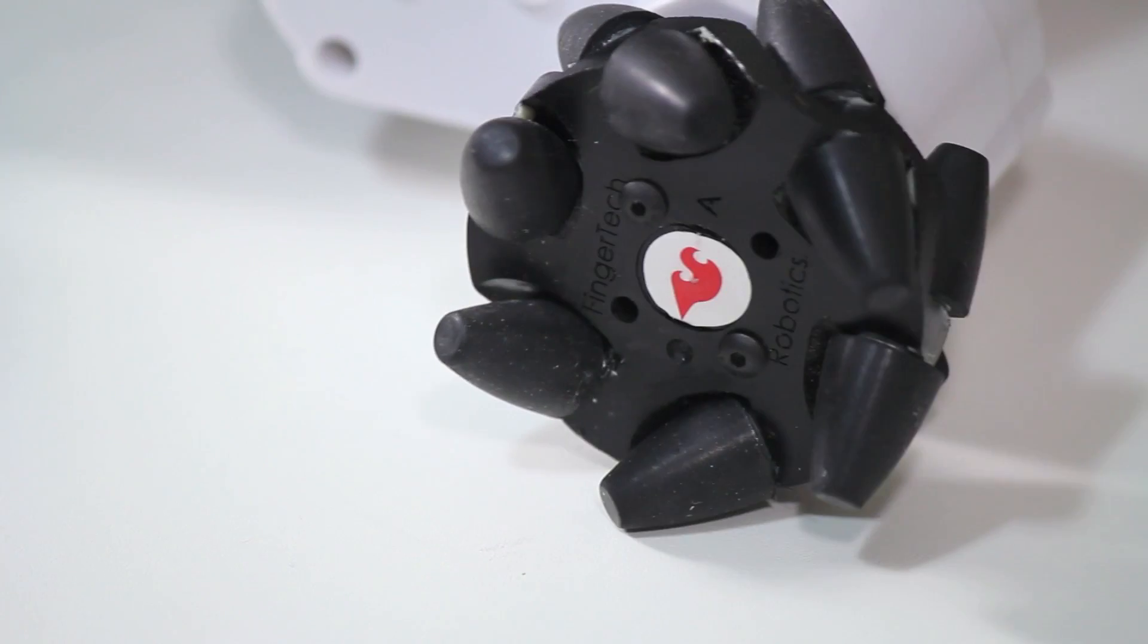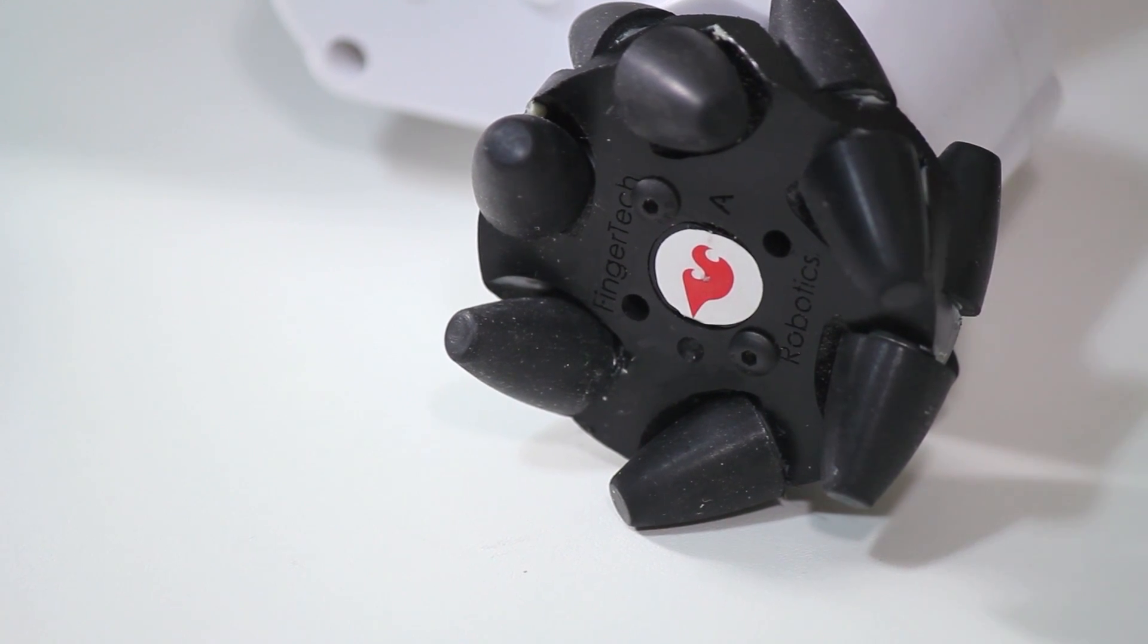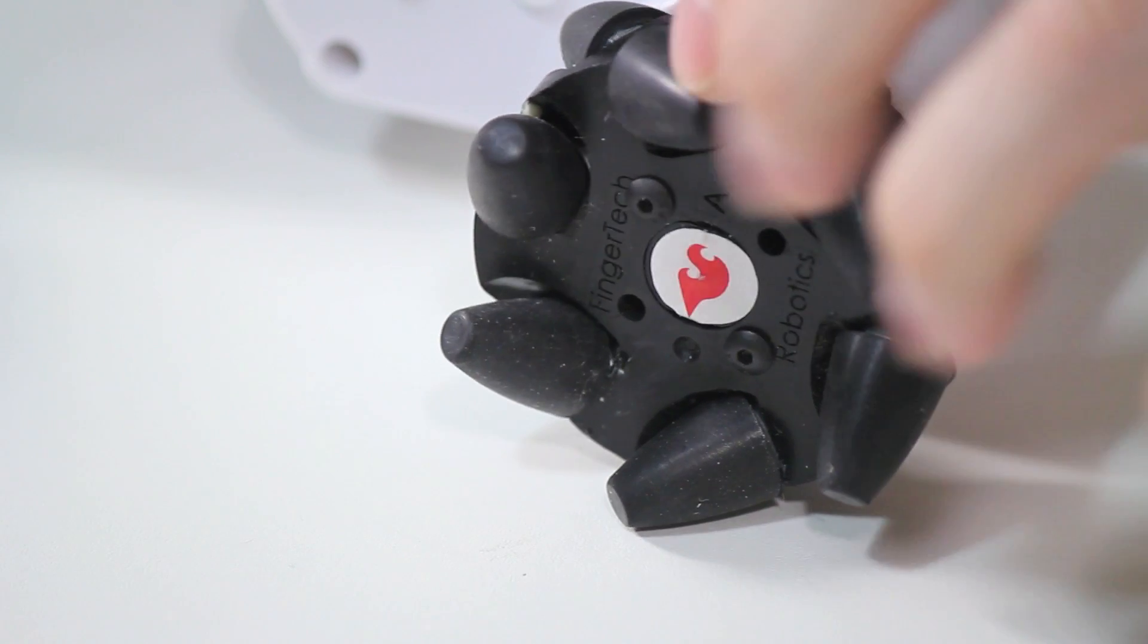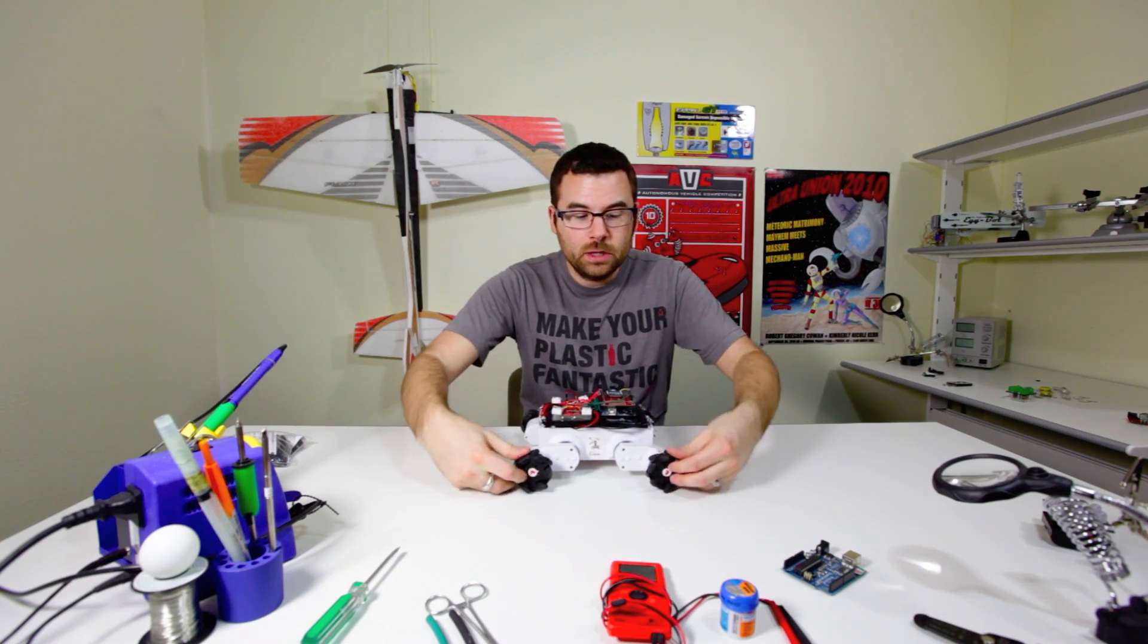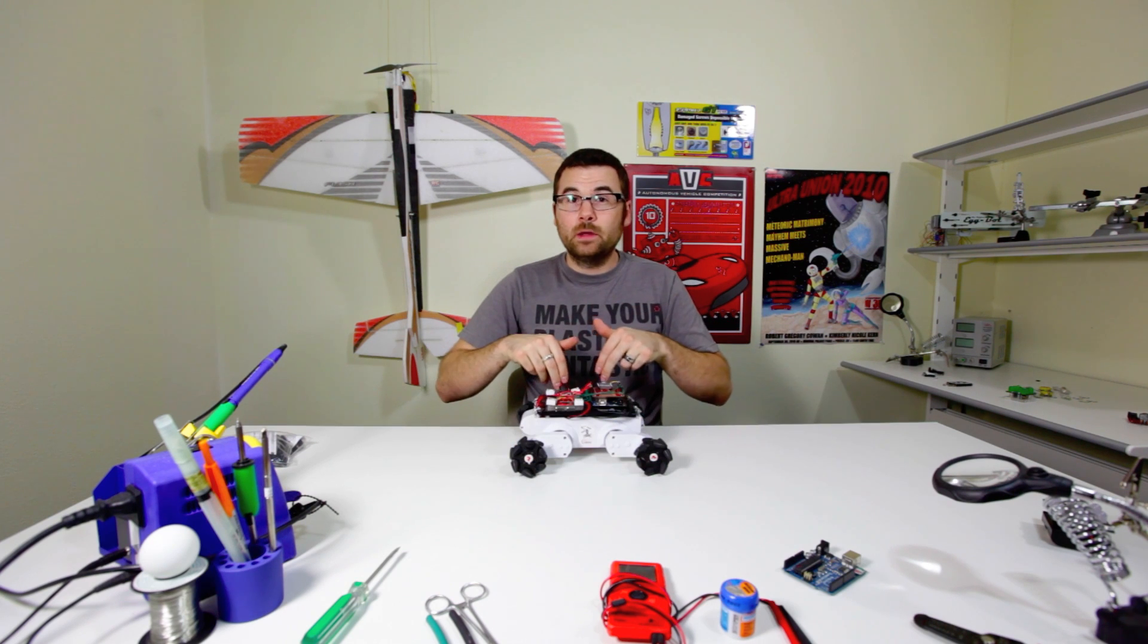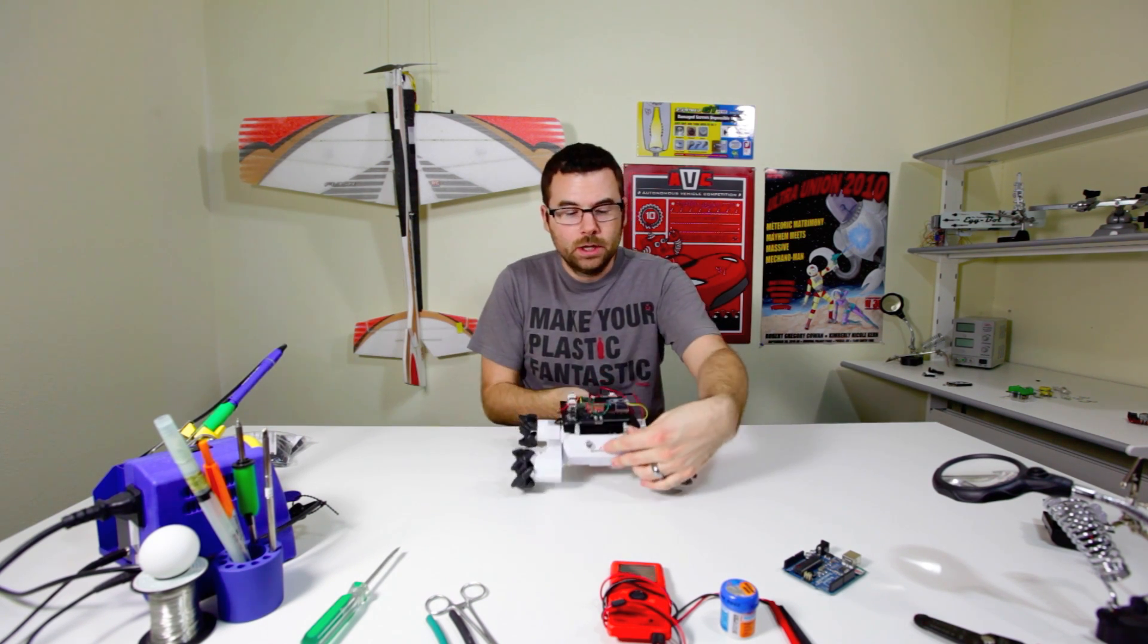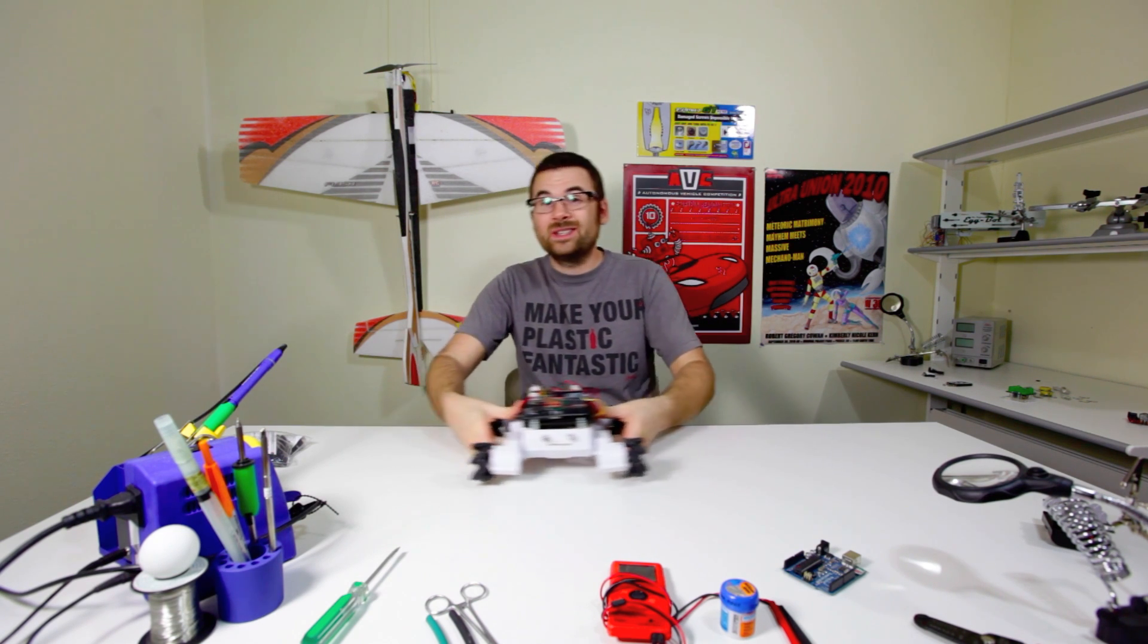What exactly are mecanum wheels? Mecanum wheels are a wheel that allows you to not only travel forward and backward, but also side to side. They have these little rollers on the wheel that when pushed inwards, it will force the robot away from it and then pulled in, it will pull the robot forward. So not only can the robot go forward and backward, but it can also go side to side.